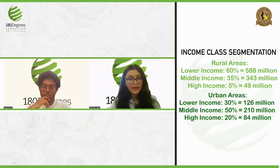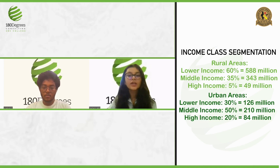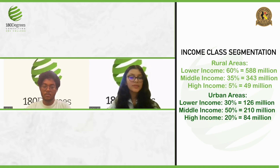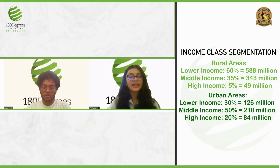For urban areas: lower income is 30% of 420 million, which comes out to 126 million; middle income is 50%, which comes out to 210 million; and high income is 20%, which comes out to 84 million.